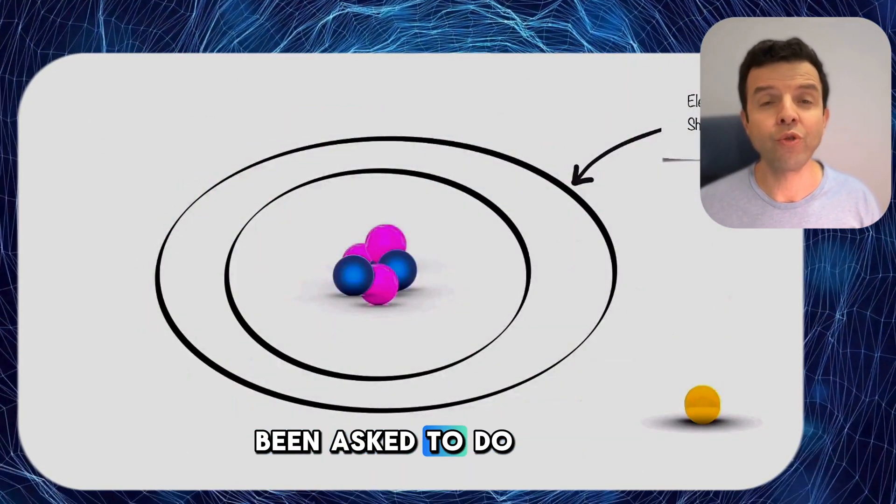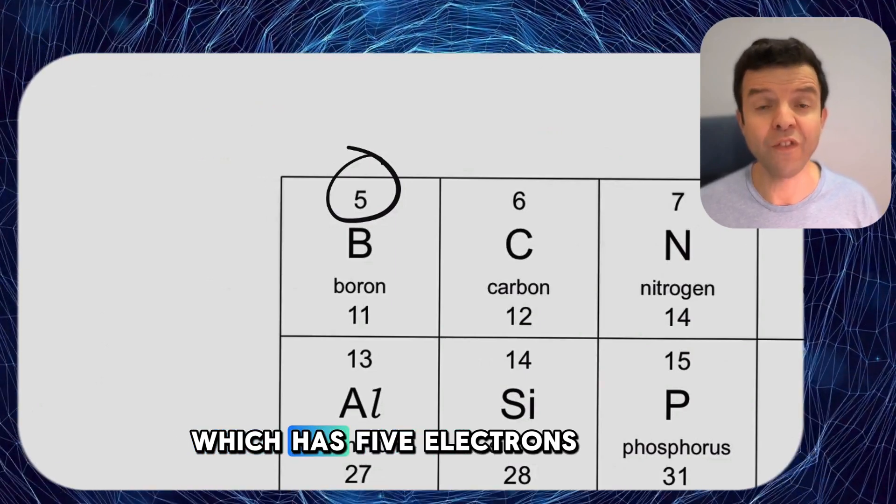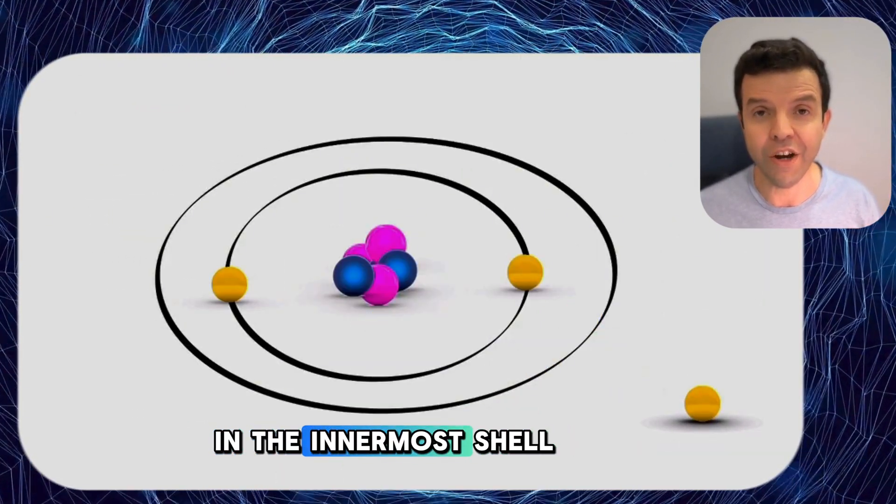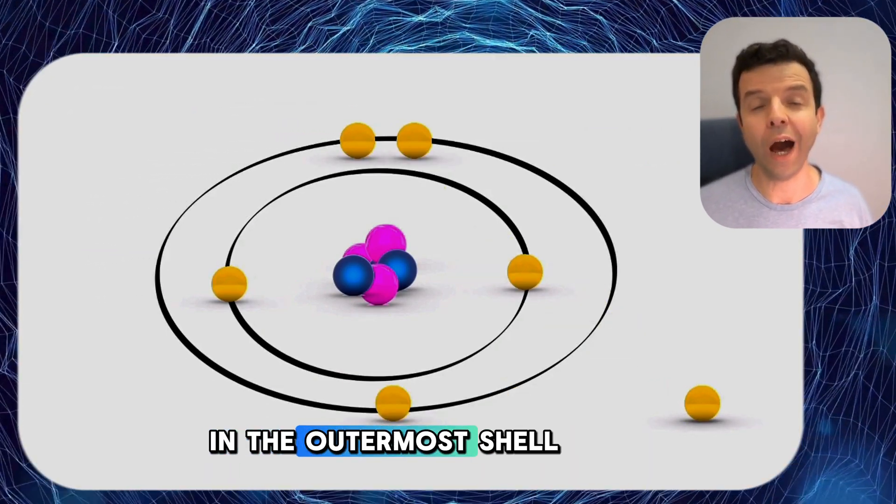Let's assume that you've been asked to do the electron configuration of the element boron which has five electrons. You will first distribute two electrons in the innermost shell and then distribute three electrons in the outermost shell.